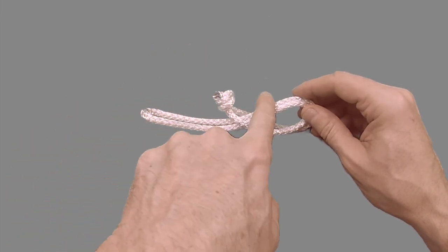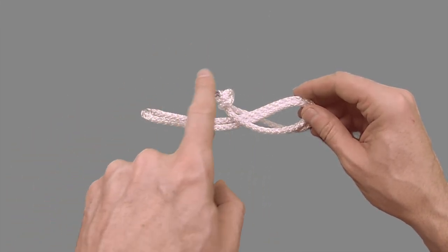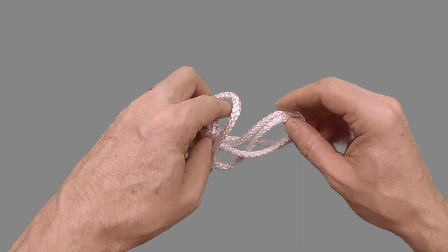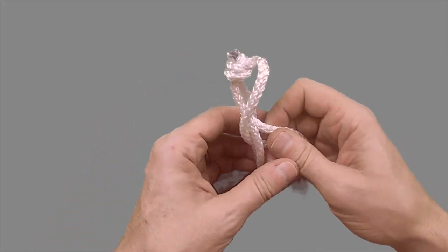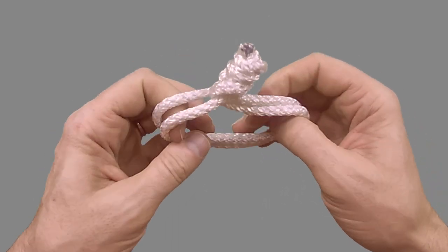You then take the tail again, this time flip it over the top of the stopper knot to create the lock. Pull the shackle tight to secure the locking point.